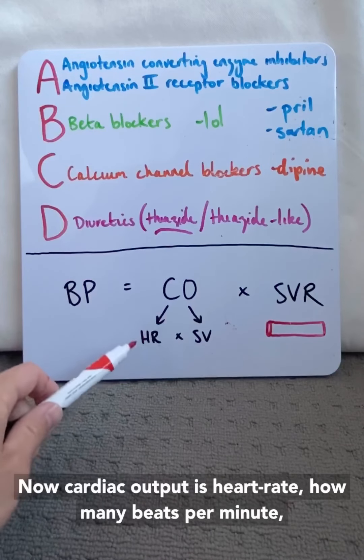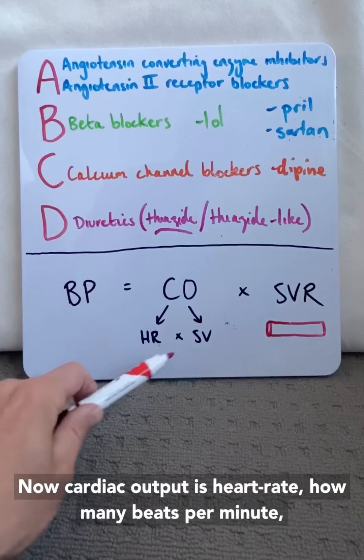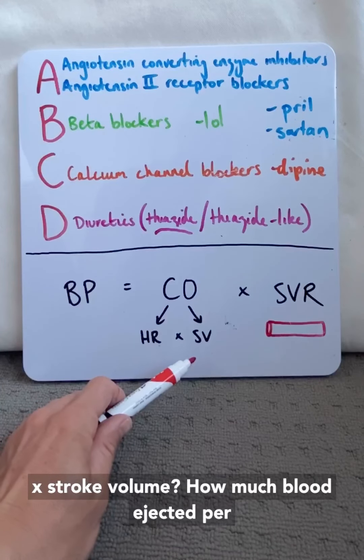Now cardiac output is heart rate, how many beats per minute, times stroke volume, how much blood's ejected per beat.